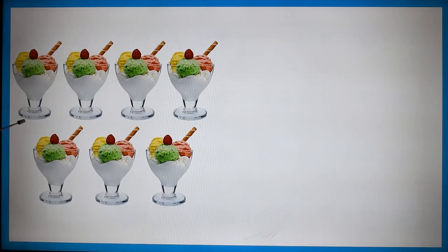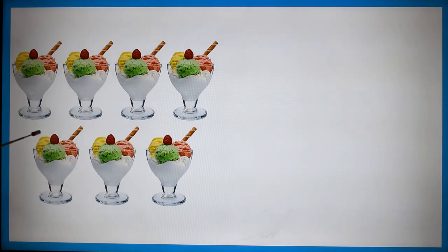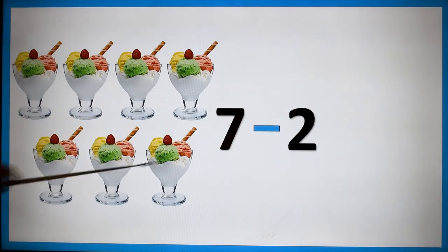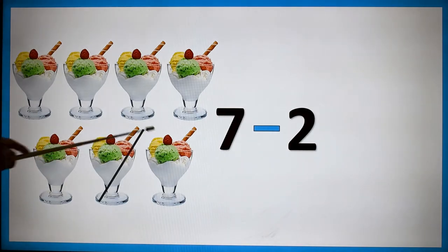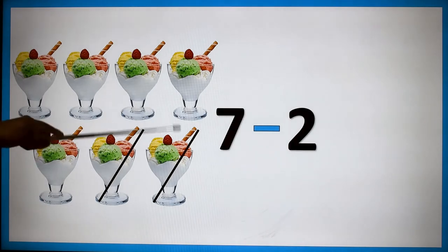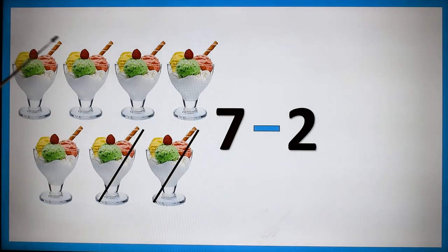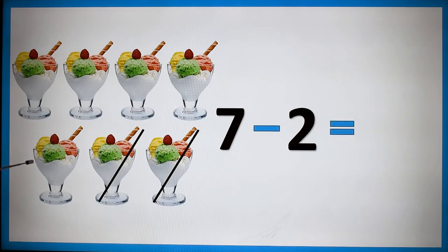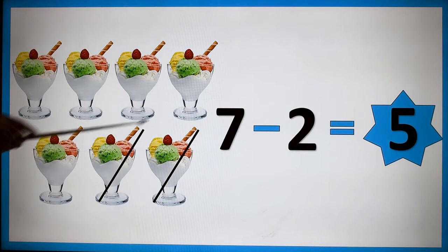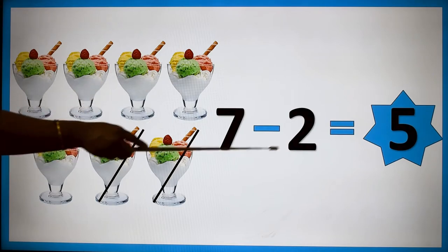Yummy ice creams! How many ice creams are there? 1, 2, 3, 4, 5, 6, 7 — seven ice creams. Seven minus two. Now I am taking two ice creams from this: 1, 2. How many ice creams are left over? 1, 2, 3, 4, 5 — five ice creams. So seven minus two is equal to five.